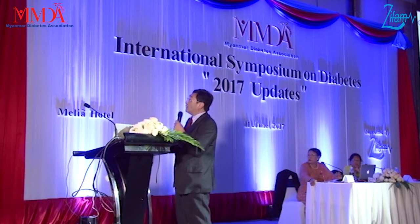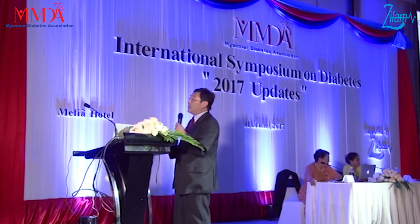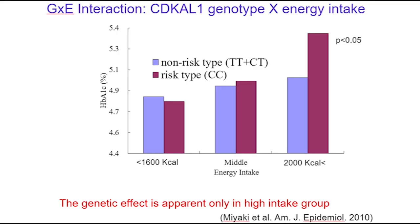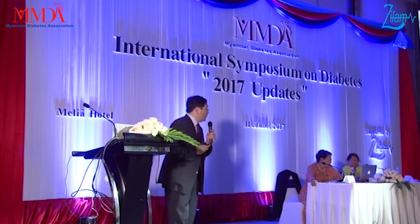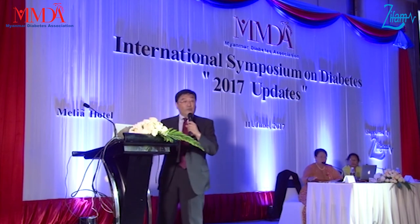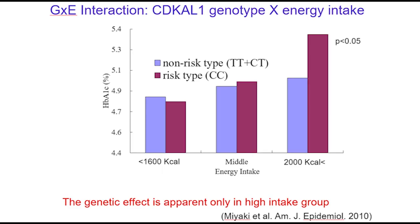We genotyped all participants — blue represents the non-risk type and purple the risk type — and stratified them by caloric intake: low (less than 1600 kilocalories), middle, and high (more than 2000 kilocalories). For those with low and middle energy intake, HbA1c levels are almost the same between the risk and non-risk types. But once they eat 2000 kilocalories or more, the risk-type people have higher HbA1c than the non-risk type.